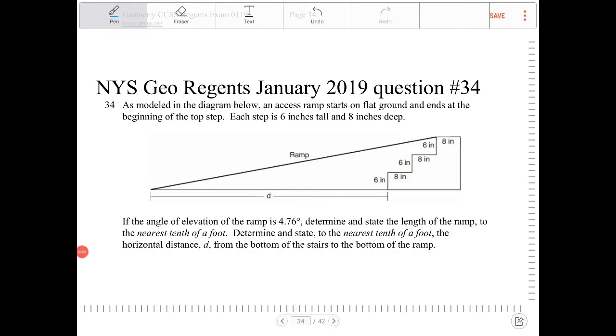As modeled in the diagram below, an access ramp starts on flat ground and ends at the beginning of the top step. Each step is 6 inches tall and 8 inches deep.